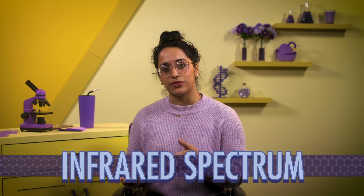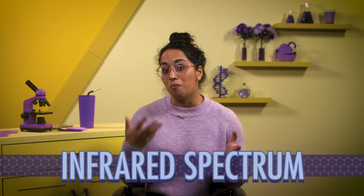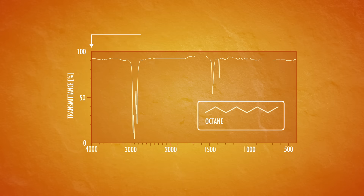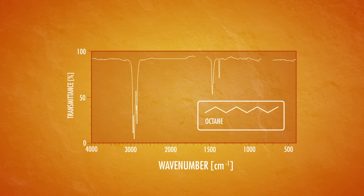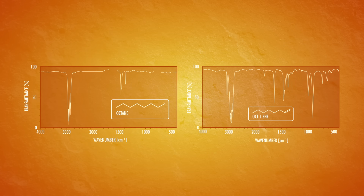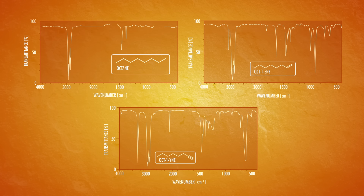Then an infrared spectrum is produced, and we can use it to help figure out what molecule it is. The y-axis is the intensity of the absorption, which is related to the kind of molecular motion. Some vibrations are more intense than others. And the x-axis uses wave numbers as the units. It's a complicated energy term, so for the sake of this already tricky concept, we're just going to say that higher wave numbers mean higher energy absorption. So let's compare the IR spectra of octane, oct-1-ene, and oct-1-yne. Carbon-hydrogen stretches occur around 3,000 wave numbers.